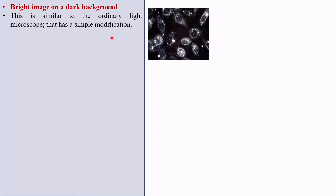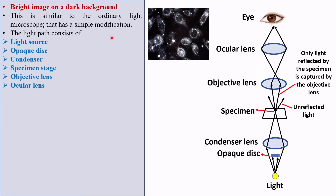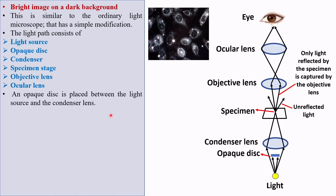The light path of a dark field microscope is similar to the ordinary light microscope — it is a simple modification. The light path consists of a light source, opaque disc, condenser lens, specimen, objective lens, and ocular lens. The opaque disc is an extra part not found in a bright field microscope.